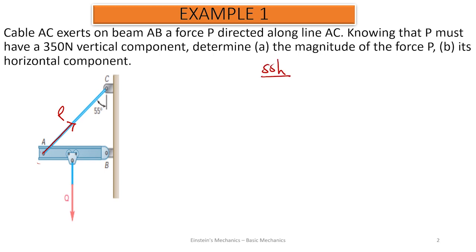This is a very simple question that we can go through. Looking at this diagram, this is the rope AC. Inside this rope there is a tension, which means there is a force, and we call it force P. It is also acting along the same line AC. Since this force P is an inclined force, it has an angle with the horizontal.